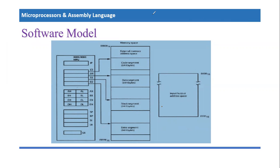First of all, we need to know why we actually need the software model. In the last tutorial, we covered the internal architecture of the microprocessor. What was shown in the internal architecture was different circuitry, how they are attached, different wires and different buses — a real hardware circuitry.